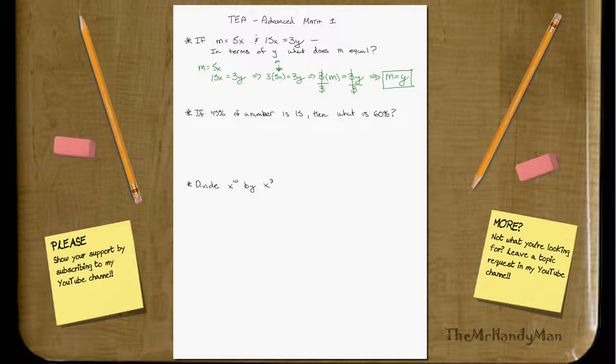So on to the next one. If 45% of a number is 15, then what is 60%? Well, we can do it one of two ways, but let's do both ways.